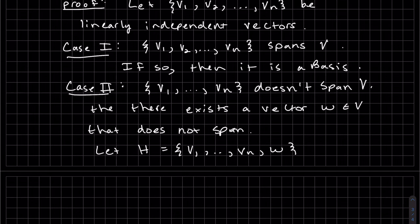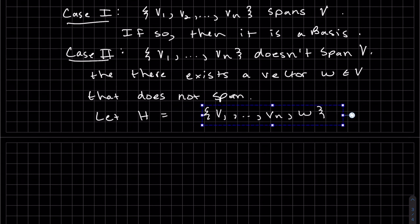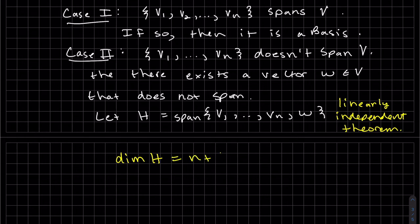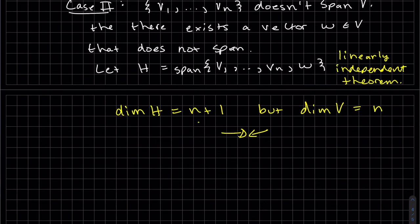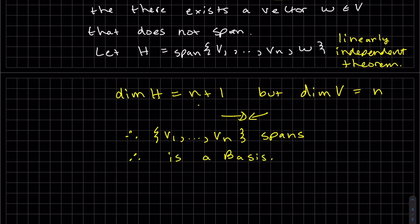So we can actually just say is the span. We can see the dimension of h is n plus 1, but the dim of v is n, and that's a contradiction because it has to be smaller. So therefore, it's a contradiction to it doesn't span. Done.